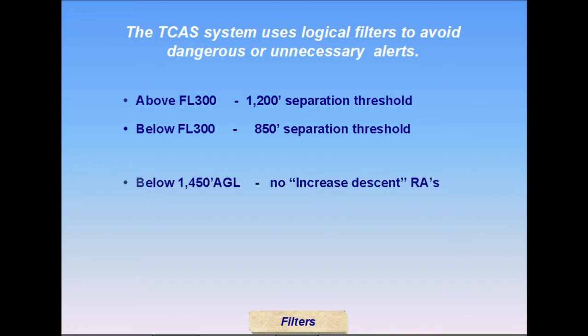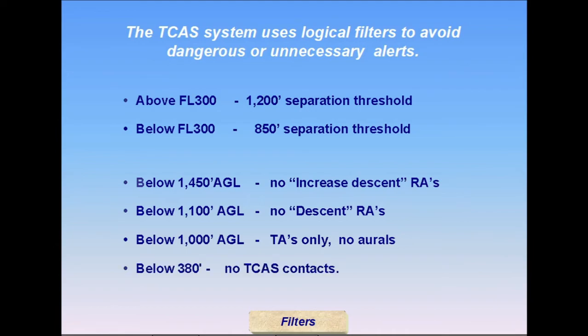All descent advisories are inhibited below 1,100 feet. Resolution advisories and aural messages are inhibited below 1,000 feet and a white TA-only tag is displayed at the bottom of the NAV display. No TCAS contacts are displayed below 380 feet AGL. These filters generally eliminate the need to use TA mode to suppress nuisance alerts in heavy traffic areas and during parallel runway operations.